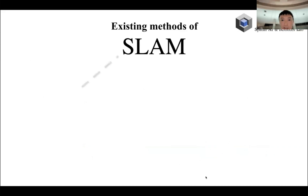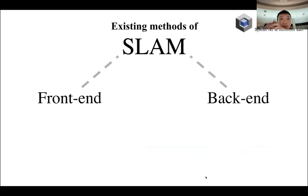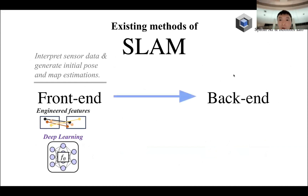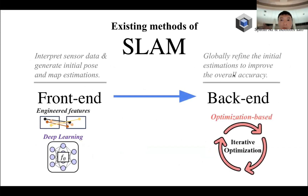So before I start, I would like to revisit the main method of existing SLAM algorithms. SLAM normally can be divided into two parts: the front end and the back end. The front end is to interpret sensor data and generate initial pose and map. For the back end, it is to globally refine the initial estimation to improve the overall accuracy.